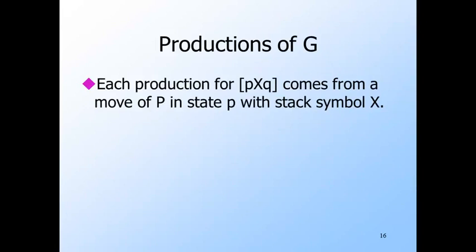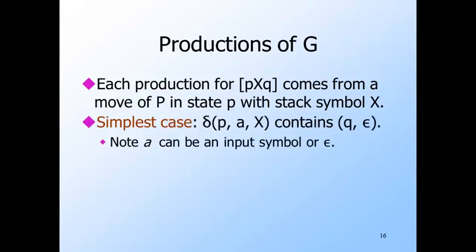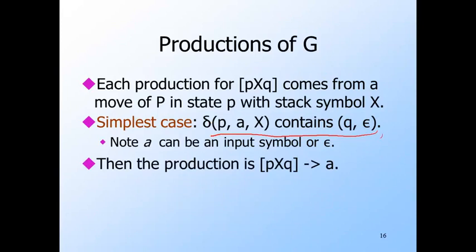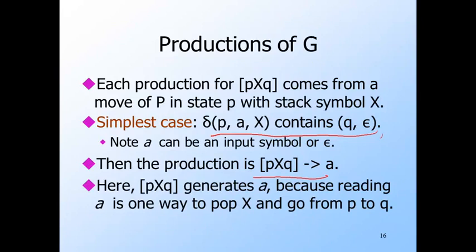There are several cases and they get increasingly more complex depending on how long the stack string is that replaces X at the first move. The easiest case is that of a rule that says, in state p with input A, which could be epsilon or a real symbol, we pop X. There, X is replaced by zero symbols. Then there is a production [p, X, q] goes to A. The reason this is correct is that reading only A is one way to have the net effect of popping X while going from state p to state q.